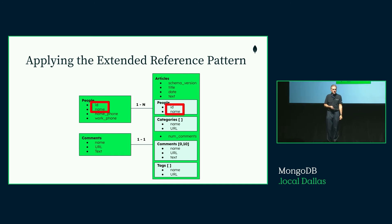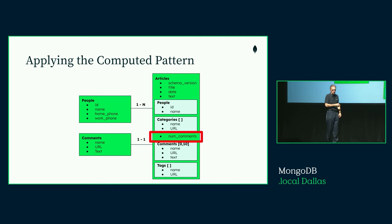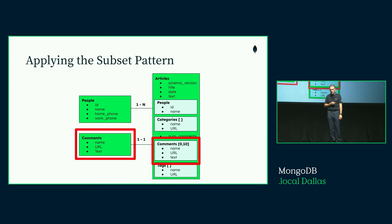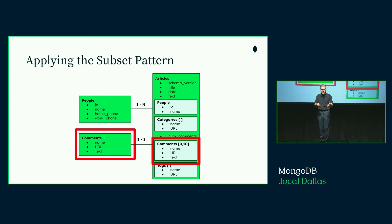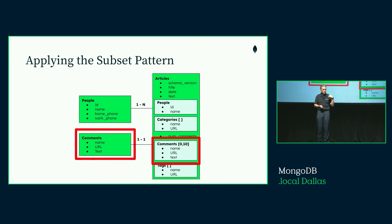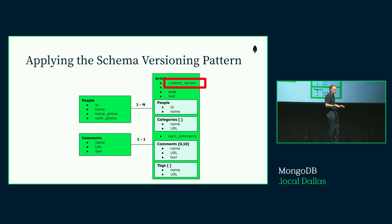An extended reference pattern: instead of embedding the full person inside an article, you have a reference, but include the name — not just the ID — so you don't have to look it up all the time. Another pattern is pre-computing the number of comments so you don't have to count every time — we call this the computed pattern. A subset pattern keeps only the last ten or ten most useful comments embedded in the main document for fast reads, and you fetch more when needed. In our solution, we end up with three collections. Finally, the schema versioning pattern is simply having a schema version field and using it correctly.